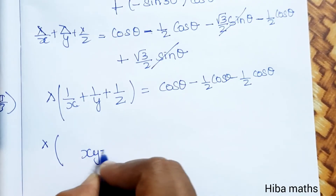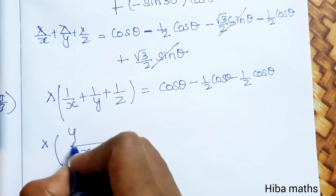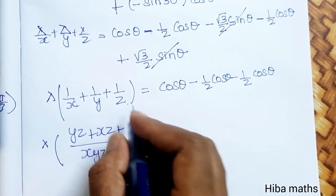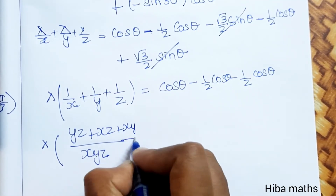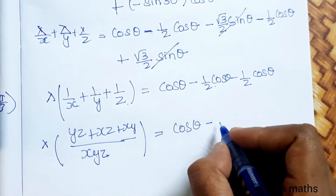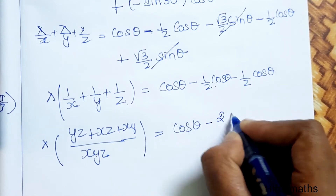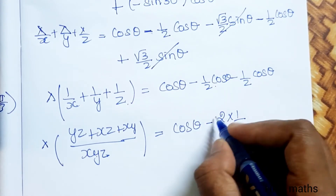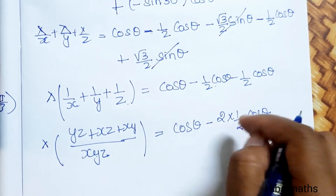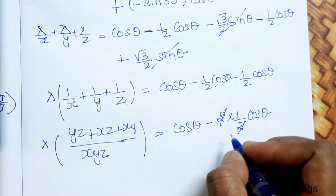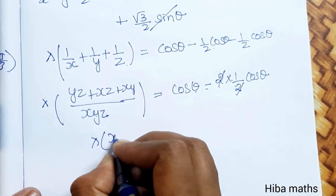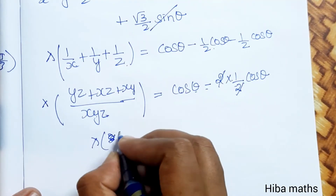Now multiplying through: λ · (yz + xz + xy) / xyz = 0. Expanding: λ(1/x + 1/y + 1/z) = λ · (yz + xz + xy)/xyz. Since cos θ − cos θ = 0, the right-hand side is 0. So 2 cancels and we get cos θ − cos θ = 0.